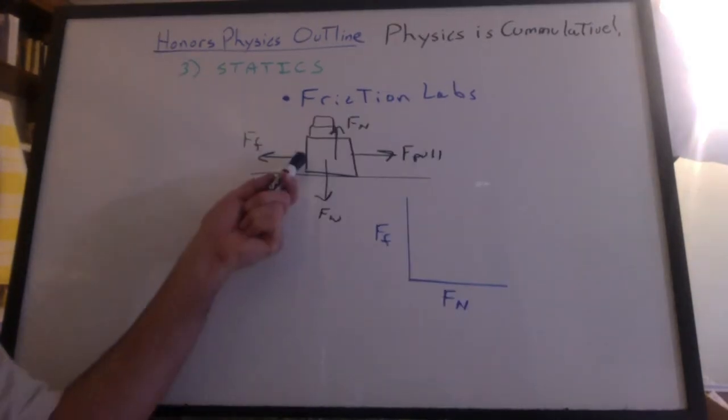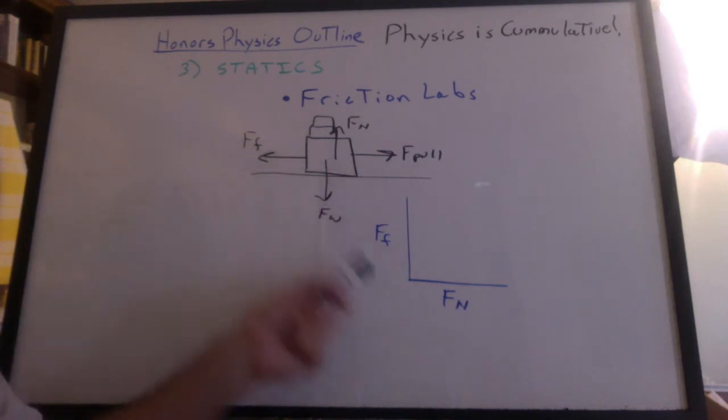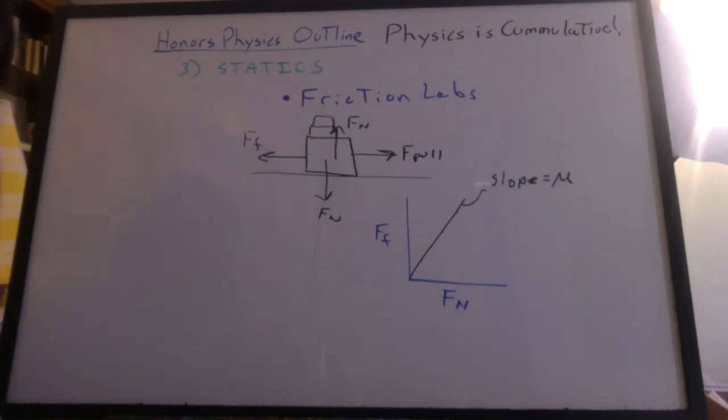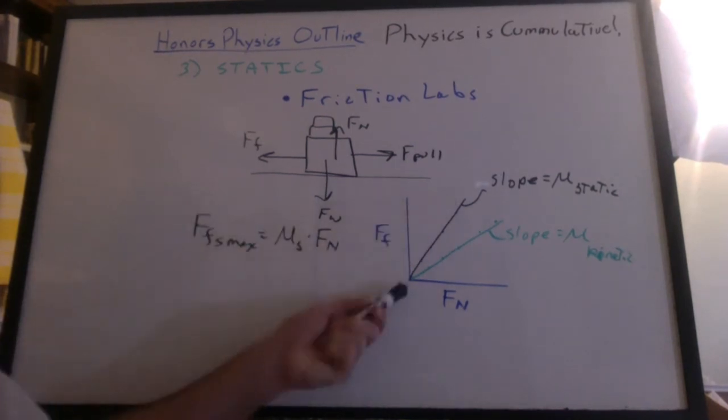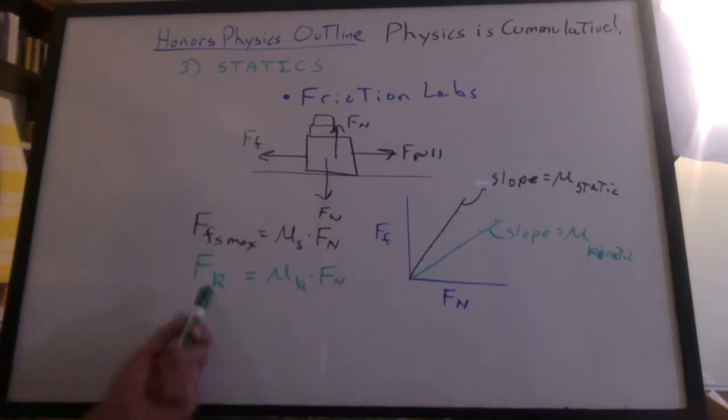You might recall that we put extra weights on the block as we pulled it, and we made a graph. We found the linear relationship. The slope, we said, was mu, the coefficient of friction. If it wasn't moving, we were calling it static. We did it again while it was moving and we called that kinetic coefficient of friction. These are linear equations.